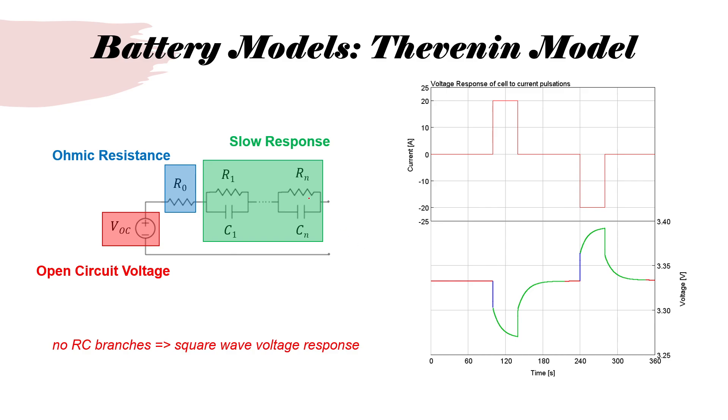Having said that, let us understand why do we need the slow response and what happens if we don't have these RC branches. In that case, if there's no RC branches, it would be a square wave voltage response. The voltage would drop suddenly and then rise back suddenly based on the current value. Similarly, during charge, this would be the behavior. Now, this is fairly inaccurate assumption. There's a big difference here between the actual voltage and the simulated or predicted voltage. So to fill this gap, we need additional RC branches.